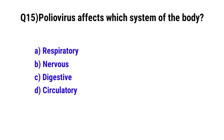Question No. 15: Which system of the body? The correct option is B: Nervous system.